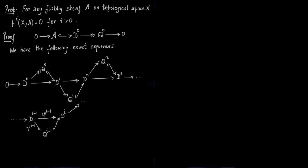Then you take Di and form this quotient sheave QI. QI is nothing but Di over image of Di minus 1. Then you form the map from Di to Di plus 1, which is the composition of maps from Di to QI and QI to Di plus 1.